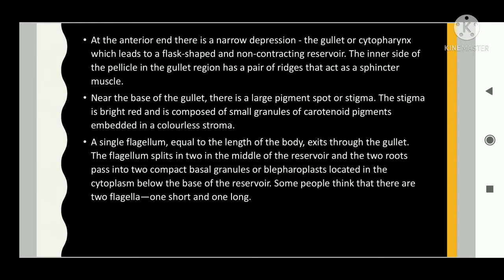At the anterior end there is a narrow depression called the gullet or cytopharynx, which leads to a flask-shaped non-contractile reservoir. The inner side of the pellicle in the gullet region has a pair of ridges that act as a sphincter muscle. Near the base of the gullet there is a large pigment spot, also called the stigma, which is bright red in color and composed of small granules of carotenoid pigments embedded in a colorless stroma. A single flagellum, equal to the length of the body, exits through the gullet.